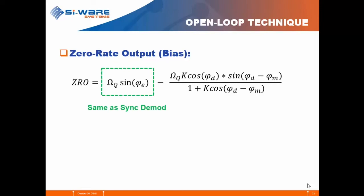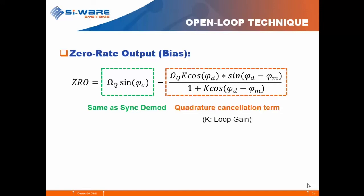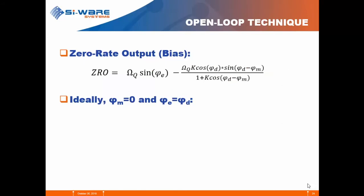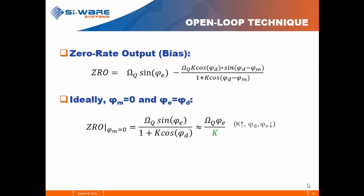Writing the zero rate output, the first term is the same as the synchronous demodulation case, and the second term is due to the quadrature cancellation loop effect, where k is the loop gain. Ideally, if the modulation error is zero and phi_e equals phi_d, the zero rate output equals the same expression as synchronous demodulation but divided by k. So the zero rate output and its variations are reduced by the loop gain k.